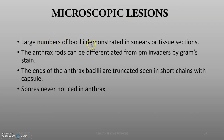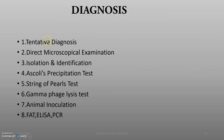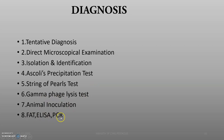The microscopic lesions show a large number of bacilli demonstrated in smears; spores are never observed in anthrax cases. Diagnosis includes tentative diagnosis by microscopical examination showing boxcar bacillus appearance, isolation and identification, Ascoli's precipitation test, string of pearls test, dermophage lysis test, animal inoculation, FAT, ELISA, and PCR.